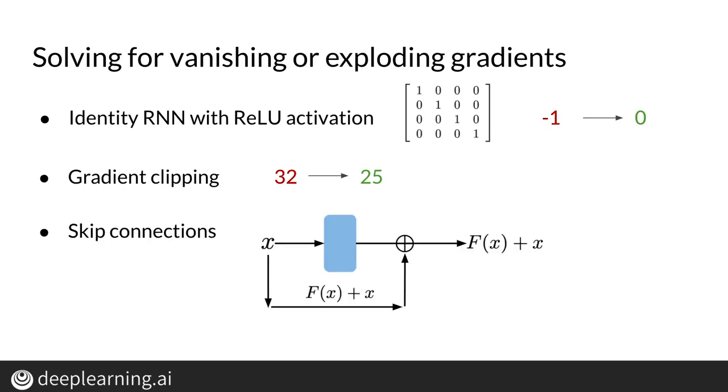Finally, skip connections provide a direct connection to the earlier layers. This effectively skips over the activation functions and adds the value from your initial input, x, to your output, or f of x plus x. This way, activations from early layers have more influence over the cost function.